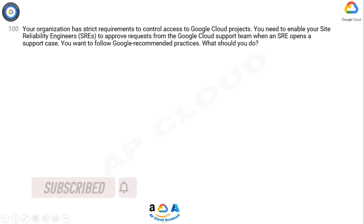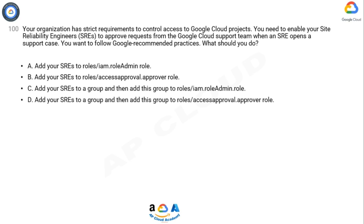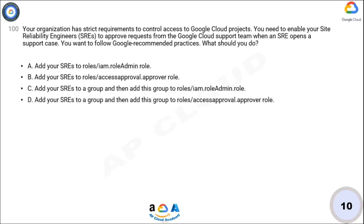Your organization has strict requirements to control access to Google Cloud projects. You need to enable your Site Reliability Engineers (SREs) to approve requests from the Google Cloud support team. When an SRE opens a support case, you want to follow Google recommended practices. What should you do? A) Add your SREs to roles/iam.roleAdmin. B) Add your SREs to roles/accessapproval.approver. C) Add your SREs to a group and then add this group to roles/iam.roleAdmin. D) Add your SREs to a group and then add this group to roles/accessapproval.approver.